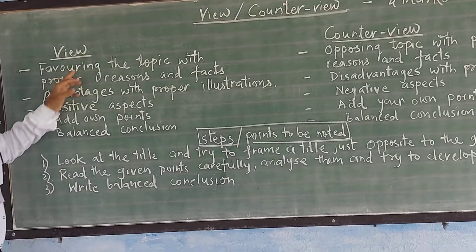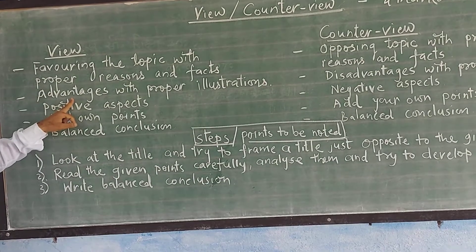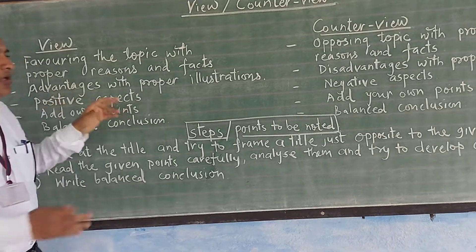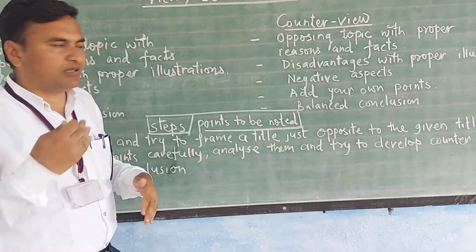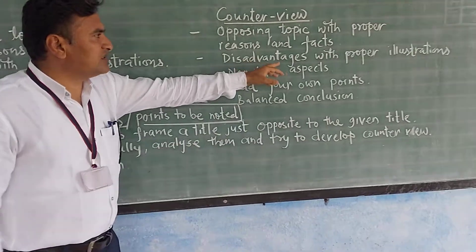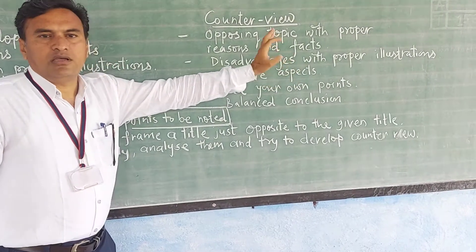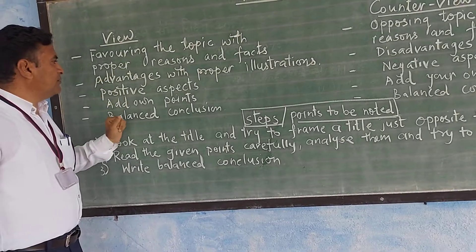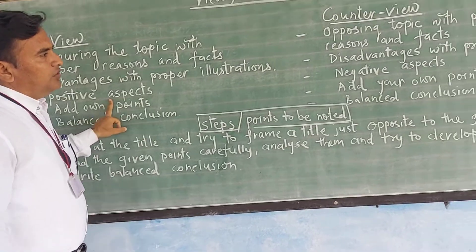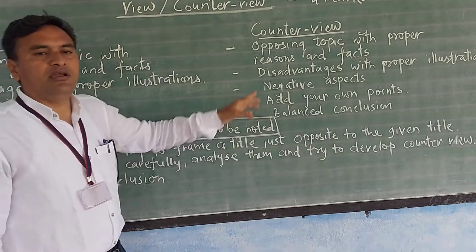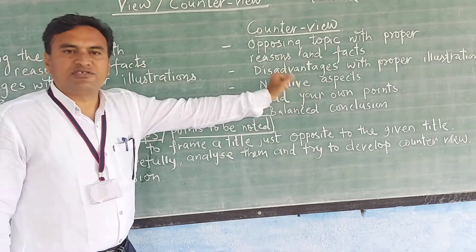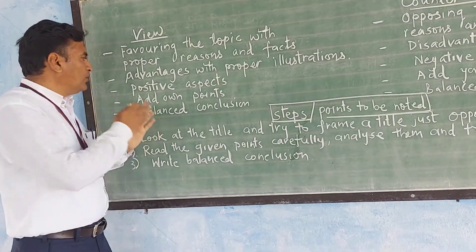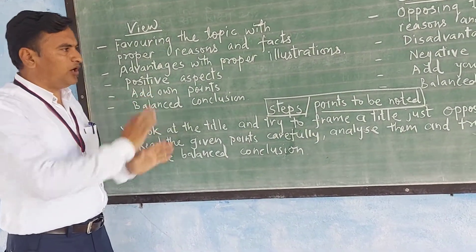Secondly, in the view section, advantages may be given with concrete illustrations. At that time, you have to think about the disadvantages of the same subject and illustrate them with proper explanation. Number three, in the view section, positive aspects are given, so you have to think about the negative aspects of the same subject. And there is always space where you can add your own points as well.